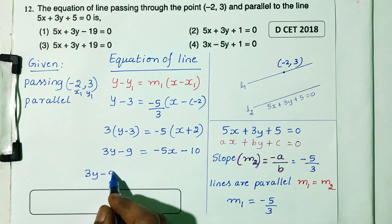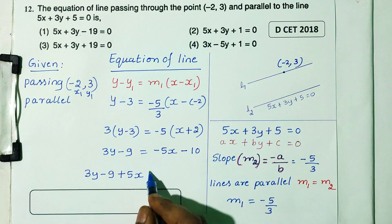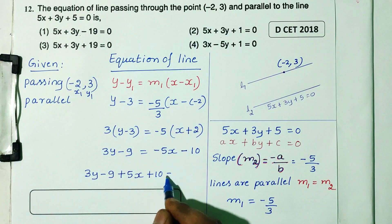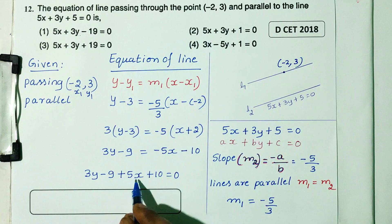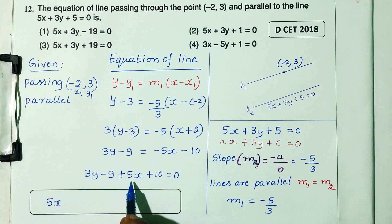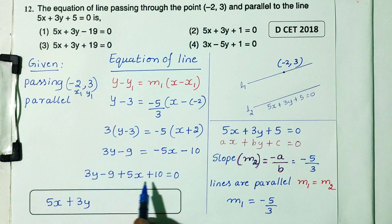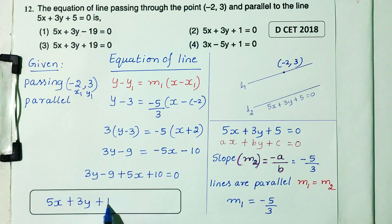Simplifying: 3y minus 9 equals minus 5x plus 10. Rearranging: 5x plus 3y plus 10 minus 9, that is 5x plus 3y plus 1 equals 0.